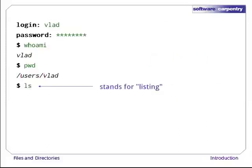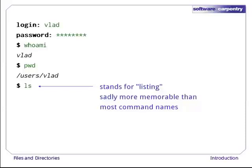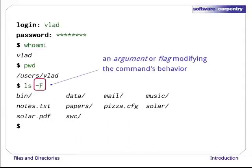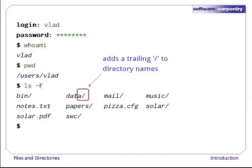Let's see what's inside vlad's home directory by running ls, which stands for listing. ls prints the names of all the files and directories in the current directory, in alphabetical order, arranged neatly into columns. To make its output more comprehensible, we can give it the argument or flag -f. This tells ls to add a trailing slash to the names of directories.